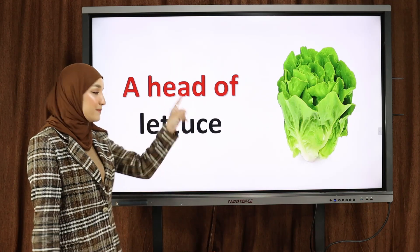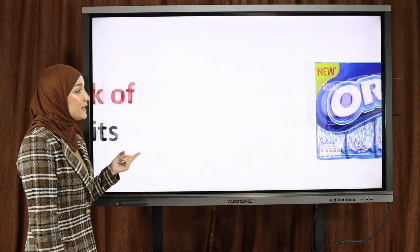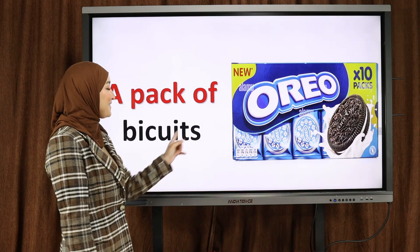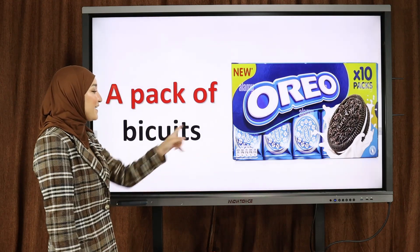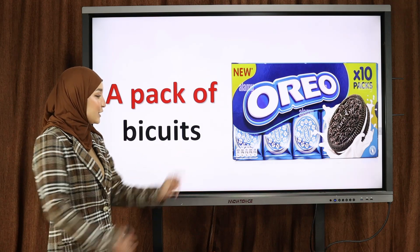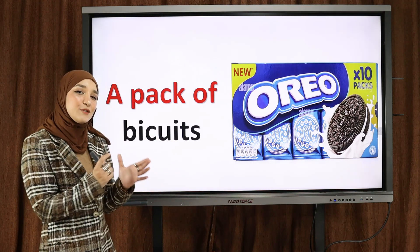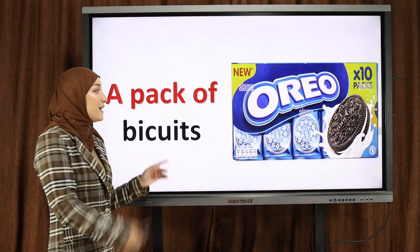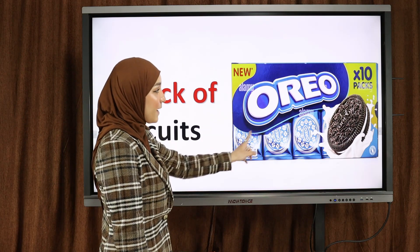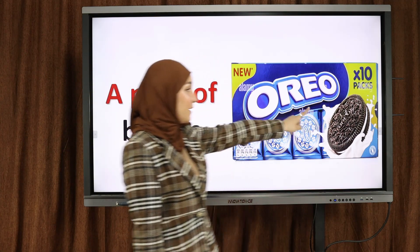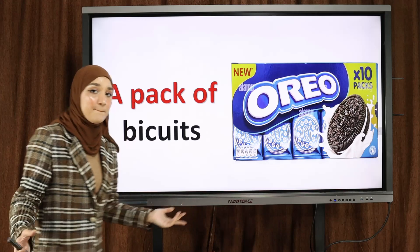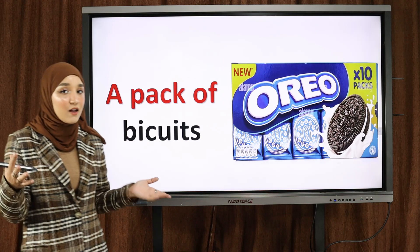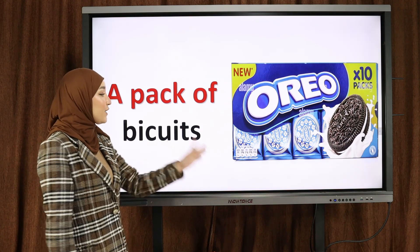A head of lettuce — رأس من السلاطة. Or broccoli, or cabbage — any vegetable. Next: a pack of biscuits. Notice 'biscuits' — the U and I are not pronounced, we say 'biscuits'. A pack of biscuits — this is a pack of 10 pieces, sometimes a pack has 6 or 12.